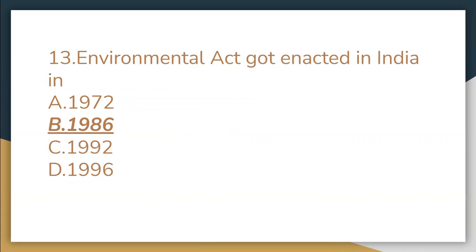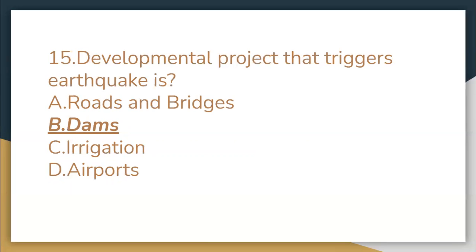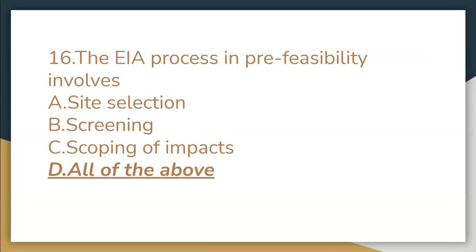The Environmental Act got enacted in India in 1986. The first environmental movement took place in the 1960s. The developmental project that triggers earthquakes is dams. The EAA process in pre-feasibility involves all the above.